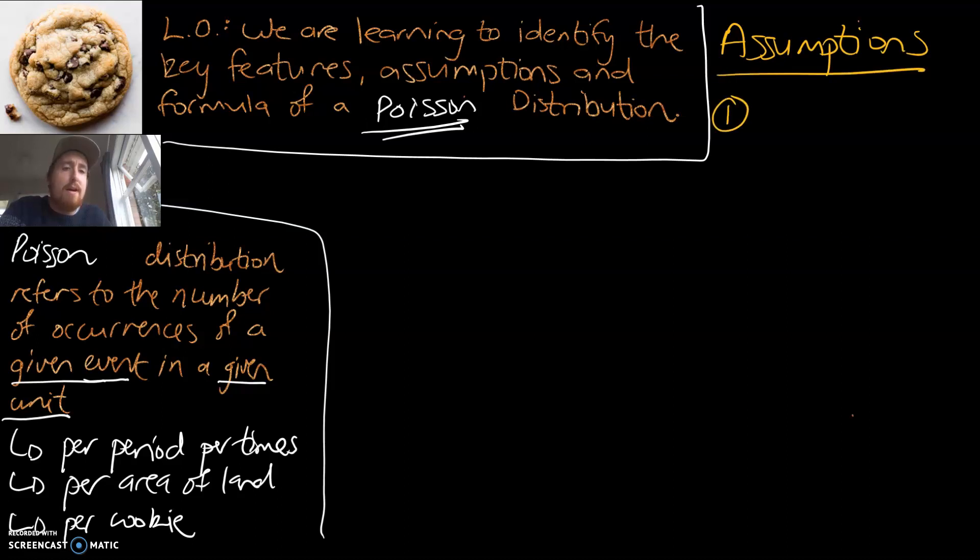There are five assumptions. Number one, you must be referring to discrete variables. For example, we looked at the number of cars going by on the motorway - you can't have part of a car. We talked about the number of dandelions in that patch of grass and we can't have part of a dandelion. We either have one or we don't, or we have a car or we don't.